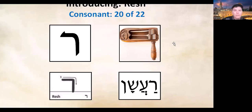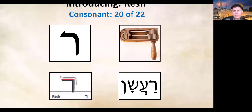Moving on to the resh tracing template — this one is very simple, just two strokes. Come across and then in an unbroken stroke come down, and you're done. It's a simple one, and most of them are quite simple, which is good. Resh appears in the word for rattle or noisemaker.